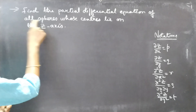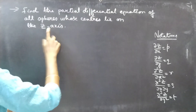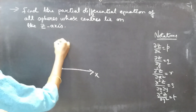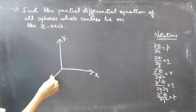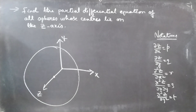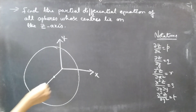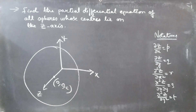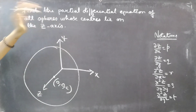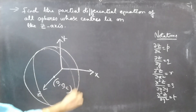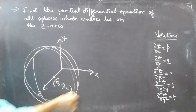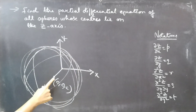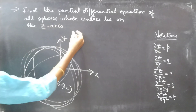We are asked to find the partial differential equation of all spheres whose centers lie on the z-axis. There is a sphere whose center lies on the z-axis — the center on the z-axis will be at coordinate (0, 0, c). Consider all spheres; just imagine too many spheres whose center lies on the z-axis.